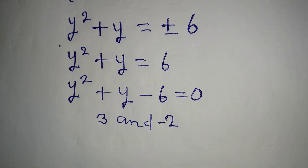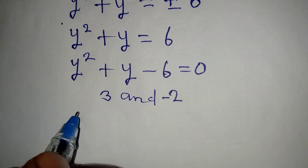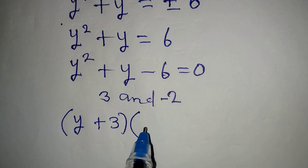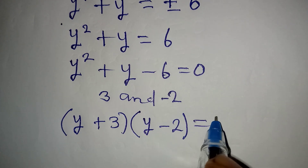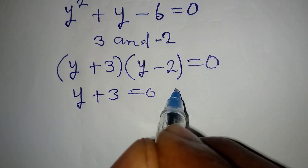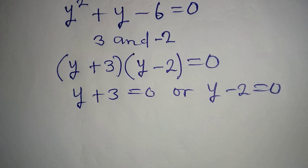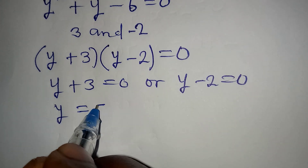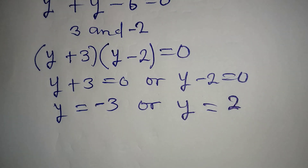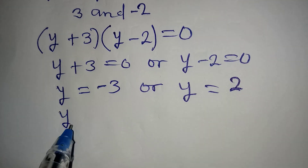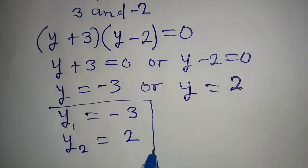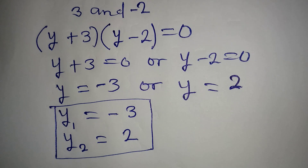The two numbers are 3 and -2, because 3 times -2 gives -6 and 3 plus (-2) gives +1. So the factors of this equation are (y + 3)(y - 2) = 0. This gives either y + 3 = 0 or y - 2 = 0, so y = -3 or y = 2. We have y₁ = -3 and y₂ = 2.